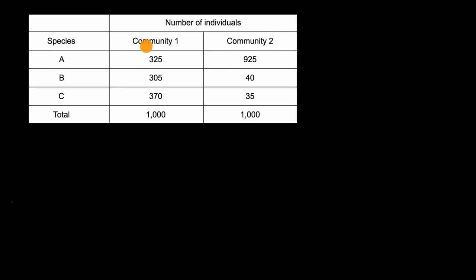So in this table here, we have two different communities, community one and community two, and each of them contain three different species. And we see the populations of those three different species. And we also see that the total number of individuals in each community is the same. They both have a total of 1,000 individuals.